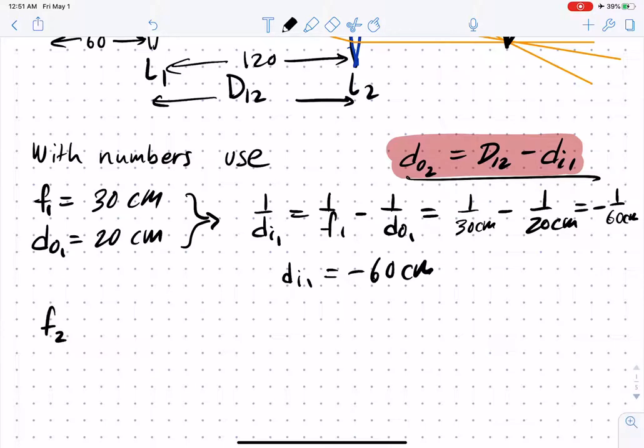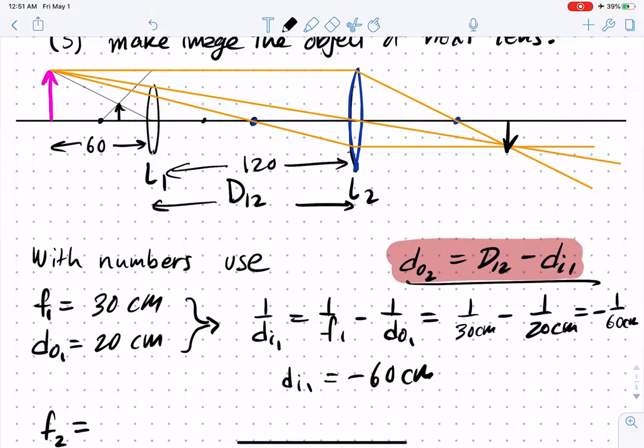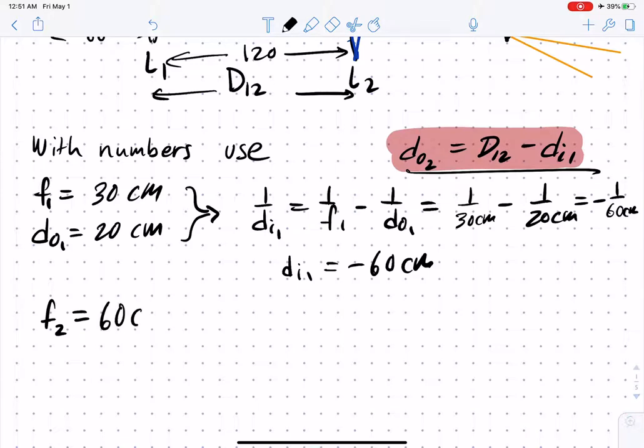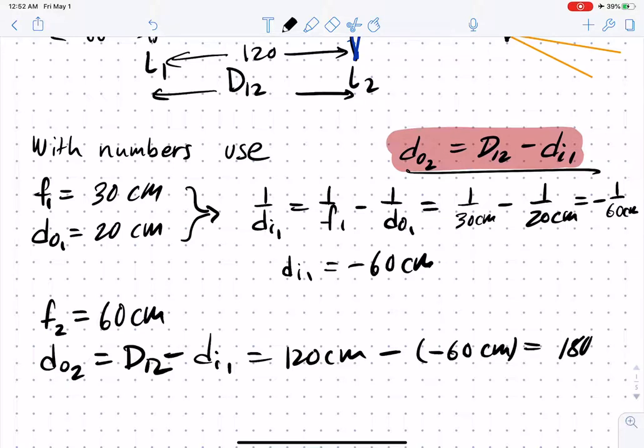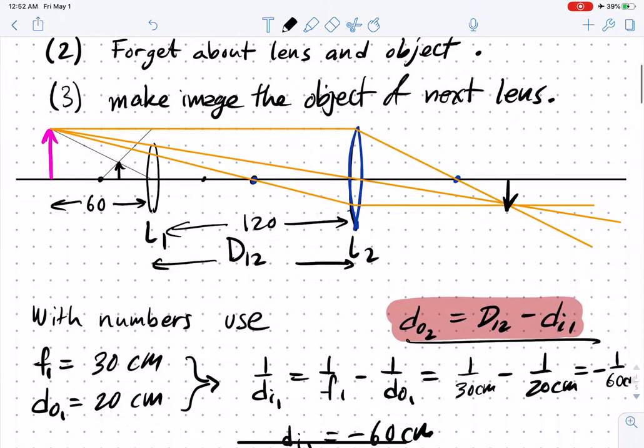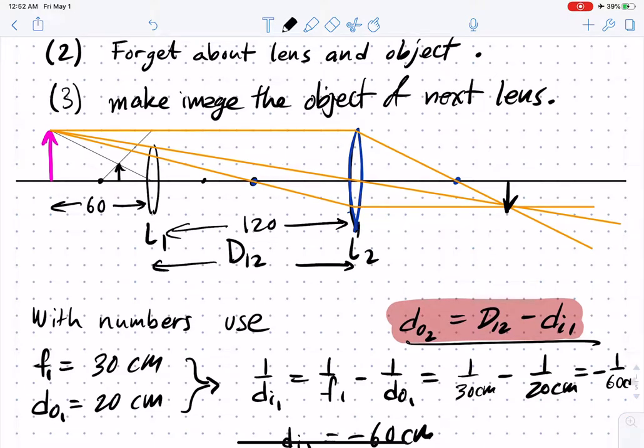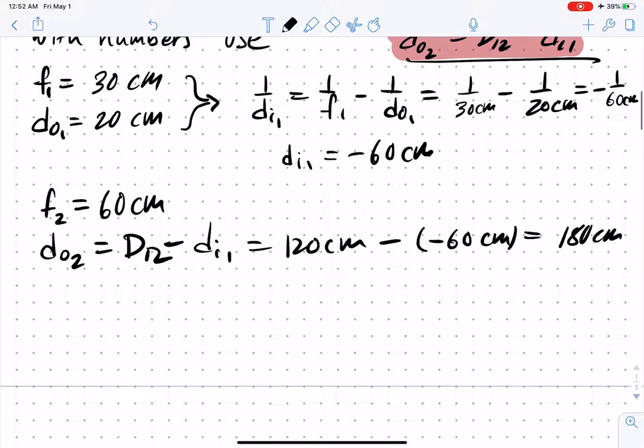The next focal length is 60, and the object for the second one is 120 minus the negative 60, so we get 180. We can verify that here - the distance from the lens to the object is 180. That then allows us to find the second image.